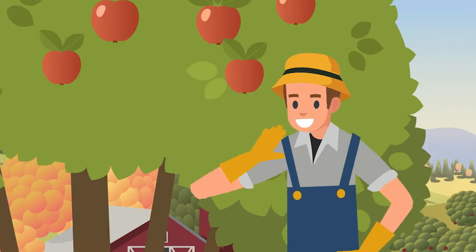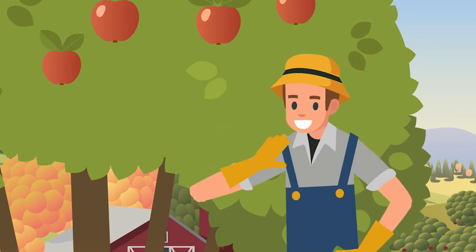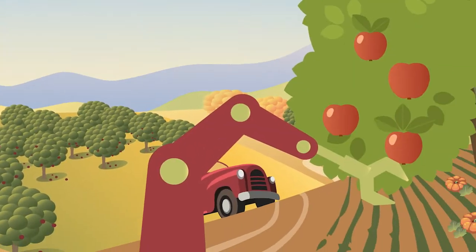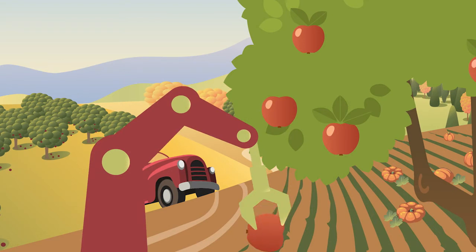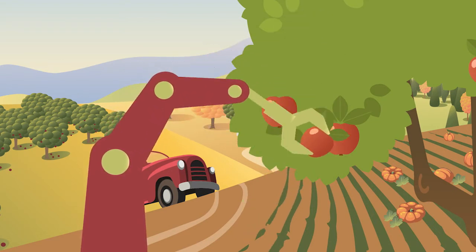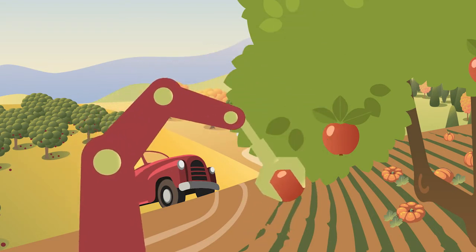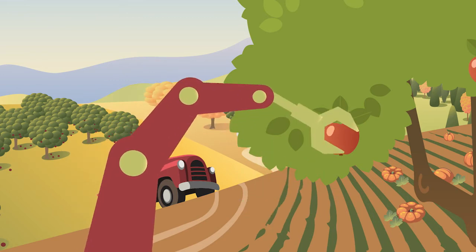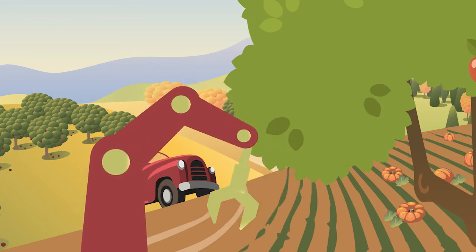Robots are at their best whenever they can assist people. When it comes to farms, robotic platforms have made the lives of workers much easier. These platforms are used in orchards to assist farmers with picking fruit.